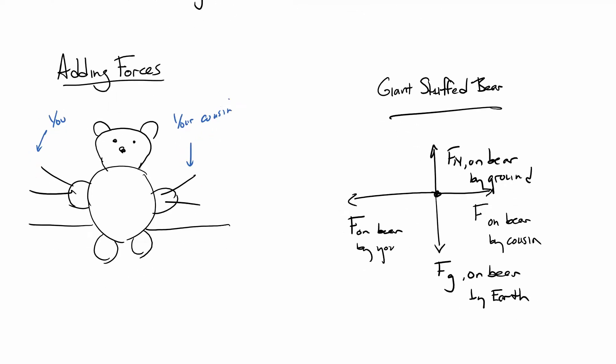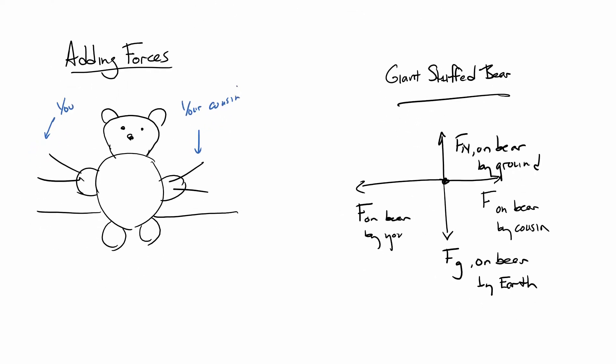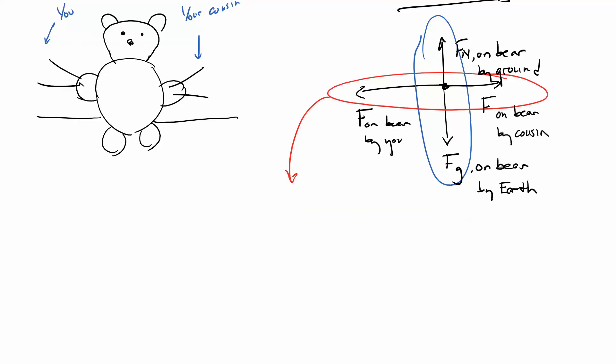Now, when we're doing this, we're going to worry about problems in one dimension at a time. What that means, I can worry about what's happening to the bear vertically, or I can worry about what's happening to the bear horizontally. Since we're fighting over the bear, let's pay attention to the horizontal stuff. So, to recap what's happening here, we've got a small force to the right by your cousin. I'm going to just stick with the shorthand labels. And then a big force to the left by U.